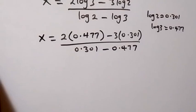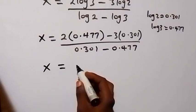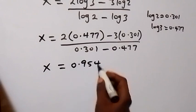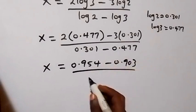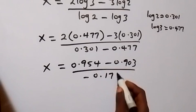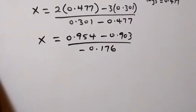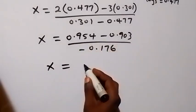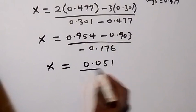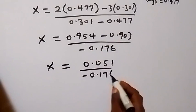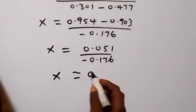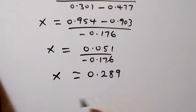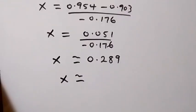Then when we multiply and simplify from here, we have x equals to 0.954 minus 0.903, then divided by — when we subtract — we have minus 0.176. And then the subtraction here gives us x equals to 0.051 divided by minus 0.176. And here we have x to be approximately equals to 0.289, which we can also say is approximately equals to 0.3 to 1 decimal place.